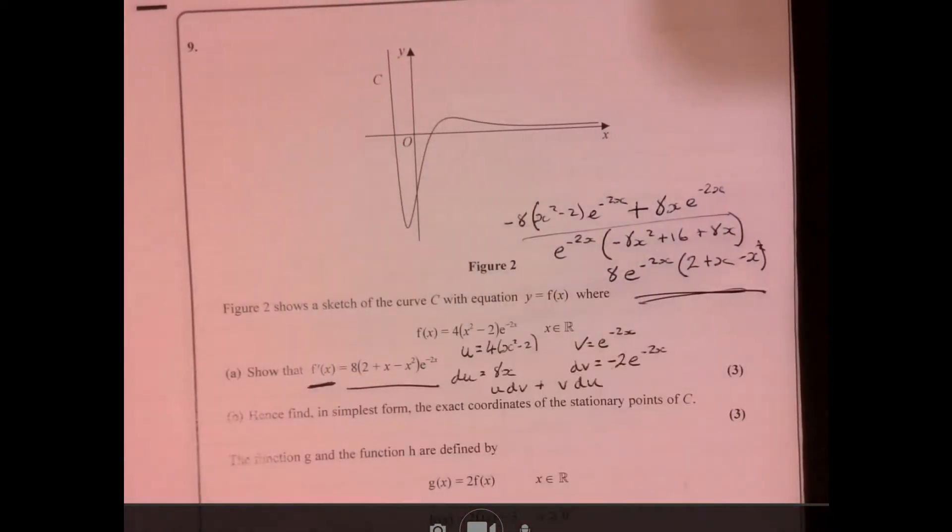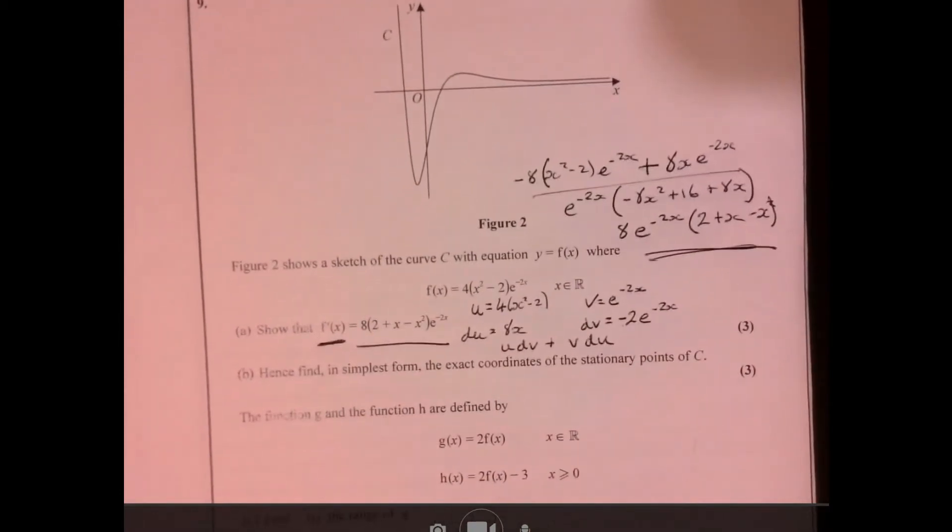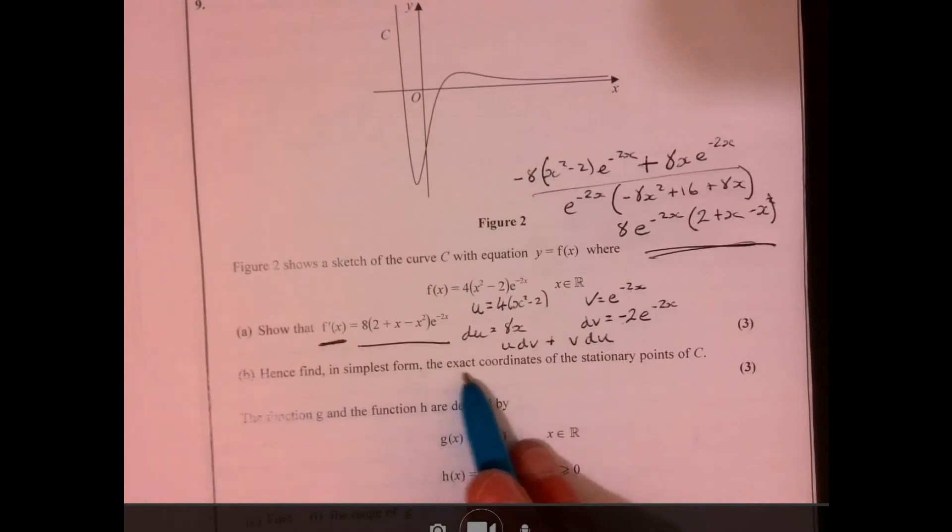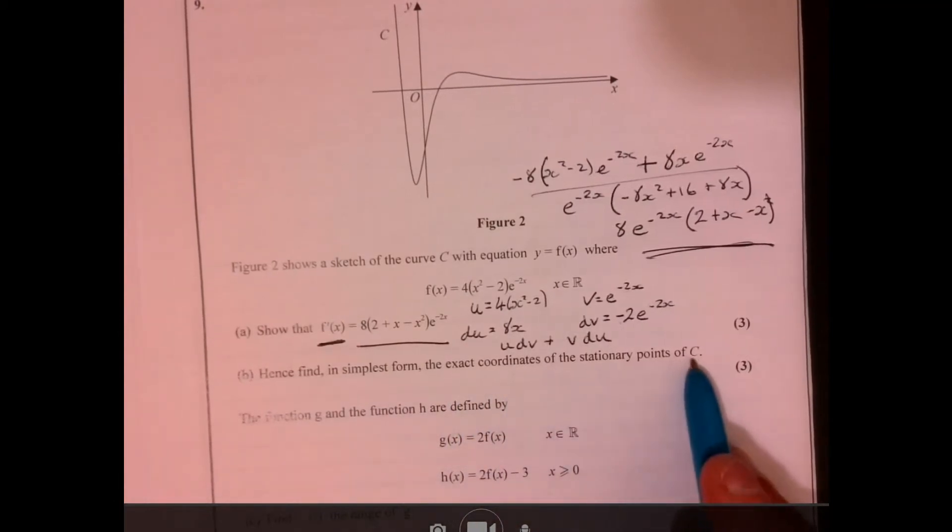And then I've got 2 plus x. Which is where we want you to get to. Right, now part b. Part b says, hence find in the simplest form the exact coordinates of the stationary points of c.